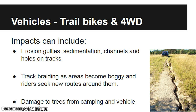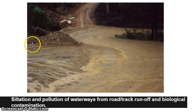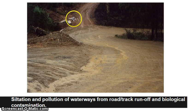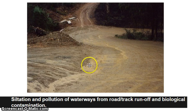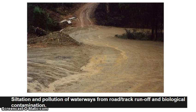Let's not forget things such as damage to trees from camping. You can see the example of the pollution of waterways from silt and sedimentation coming off the track — it all washes into the waterway, and you get biological contamination.